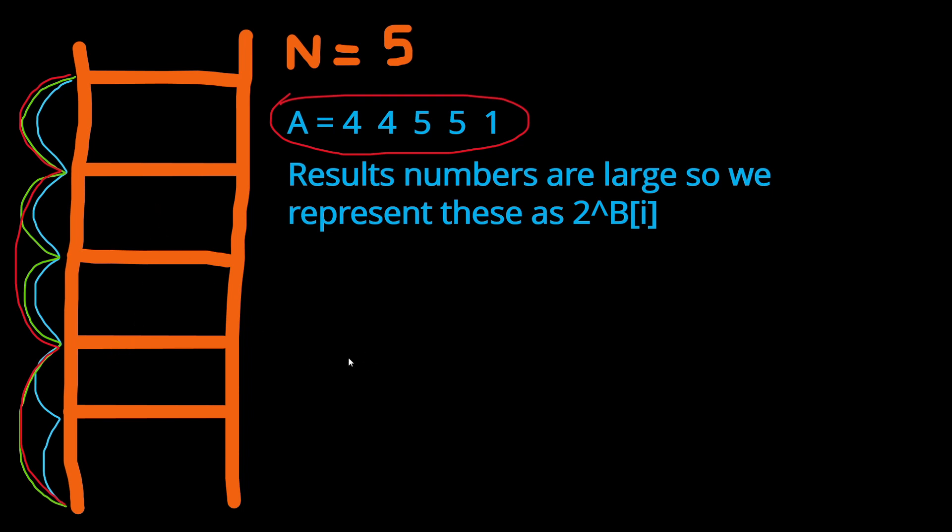In fact, since the rung A[i] can be reached either from rung A[i-1] or A[i-2], just as we can see here. So this particular rung for example can be reached with one step of two rungs from position zero or with two steps from position zero but one rung each.